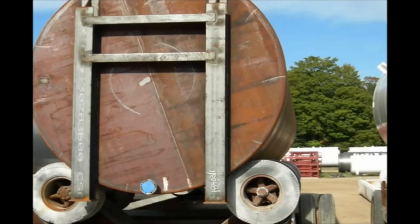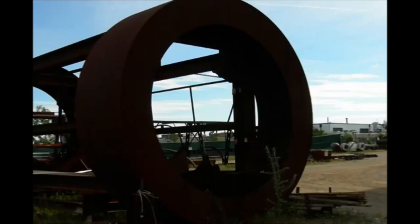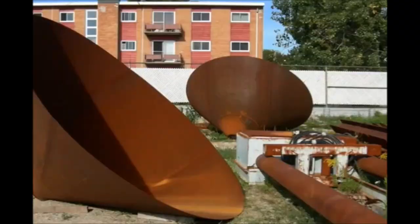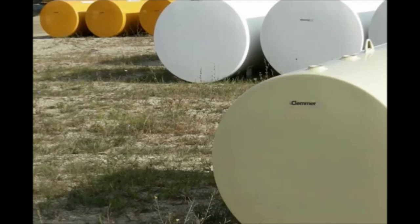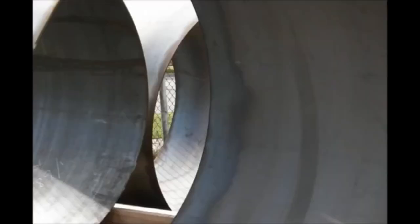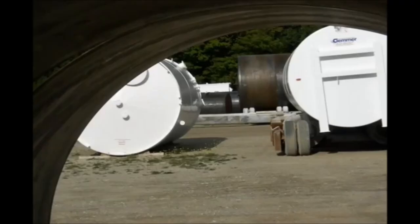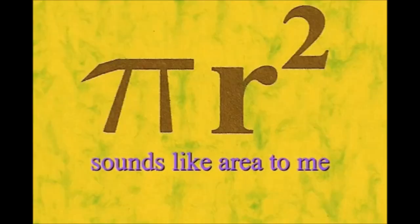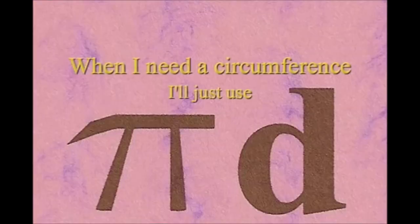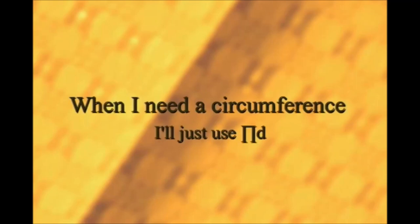Here is a circle, it knows how to get around. It has a radius from center to rim. And its diameter's a line that goes from side to side while passing through the center, now isn't that simple. Pi r squared sounds like area to me, when I need a circumference, I'll just use pi d.